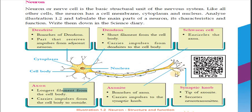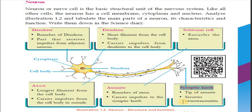The synaptic knob is the tip portion of the axonite. It secretes neurotransmitters — that is the function of the synaptic knob. So the impulse pathway through a neuron is: dendrite → dendron → cell body → axon → axonite → synaptic knob.